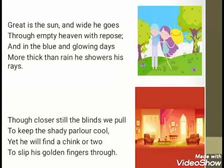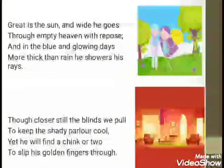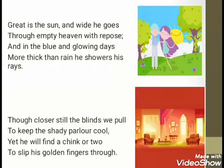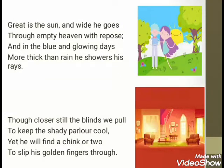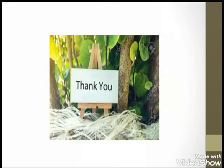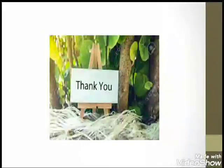In the parlor where we meet guests, even if we draw thick curtains together to avoid sun rays entering the room, the Sun finds a narrow opening to slip his golden rays through. The 'golden fingers' is an image created by the poet to describe the Sun's rays. That's it for today — in our next lecture we will cover the next three stanzas of the poem along with the elements of the poem. Bye, take care.